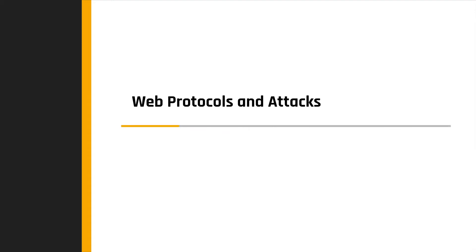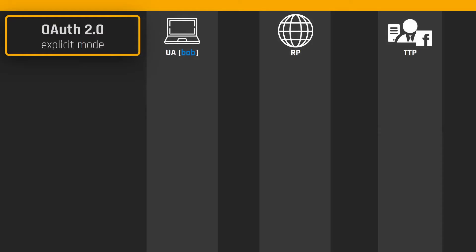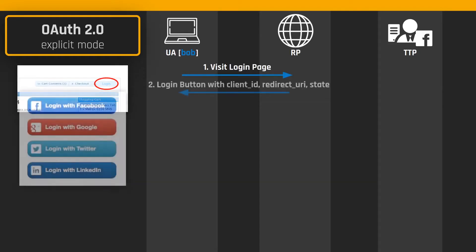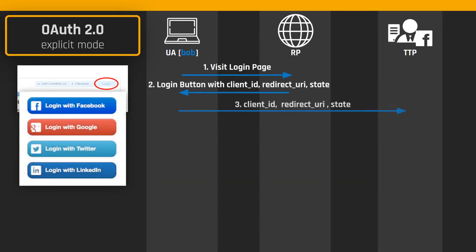Let us start by having a look at a web protocol. We will see an example run of the explicit mode of OAuth 2.0. This protocol allows a website called Relying Party to use a trusted third party — Facebook in this example — for authenticating a user which operates a user agent, a browser. I will use the abbreviated names RP for Relying Party and TTP for Trusted Third Party. The protocol starts when the user visits the website login page. The RP provides a button that when clicked sends a request to the TTP. This request contains the client ID, the redirect URL, and the state — a fresh value used by the website to maintain session binding with the user agent.